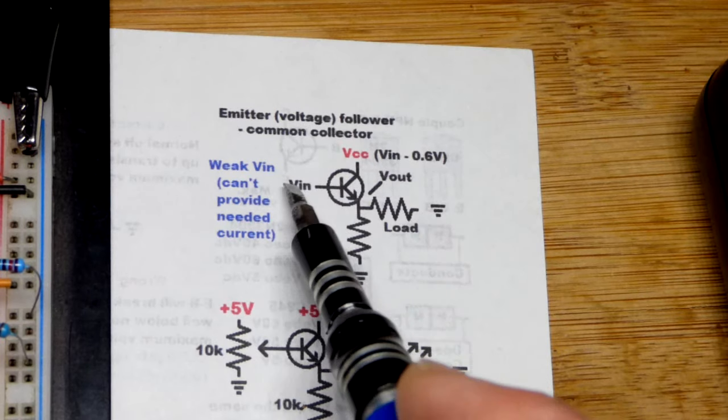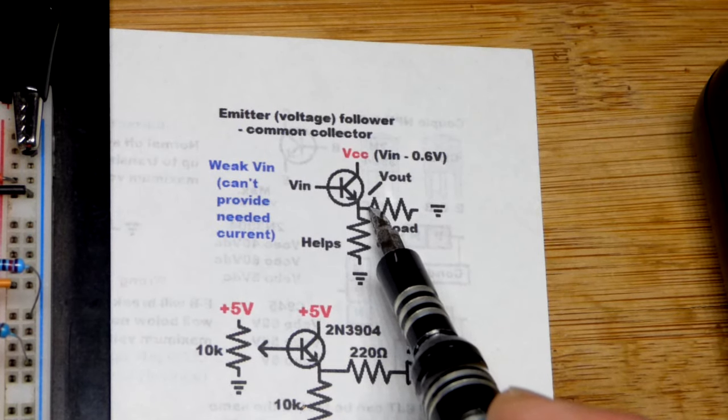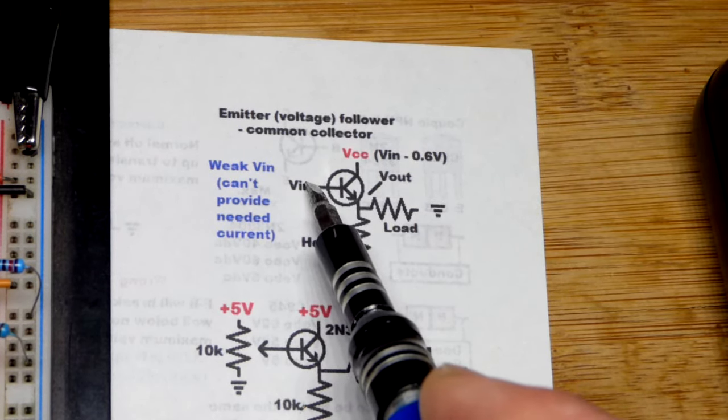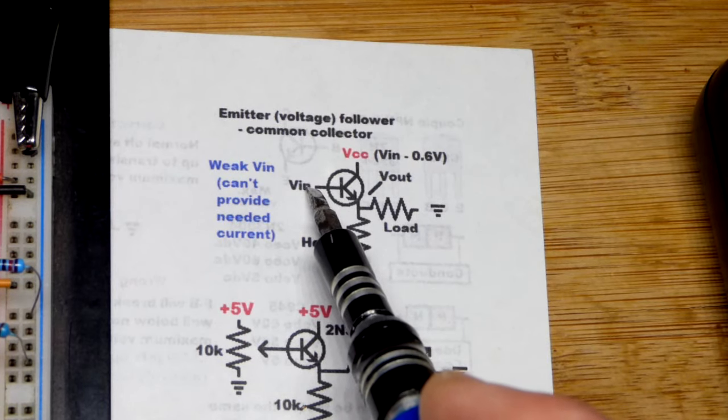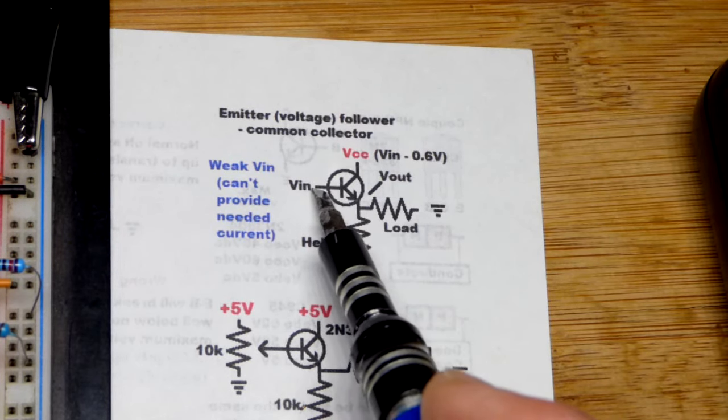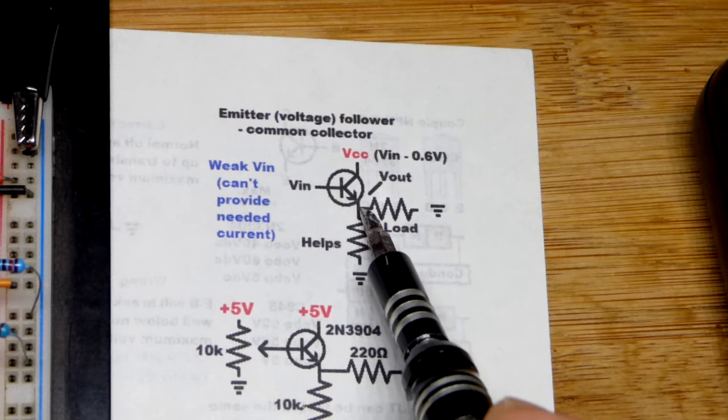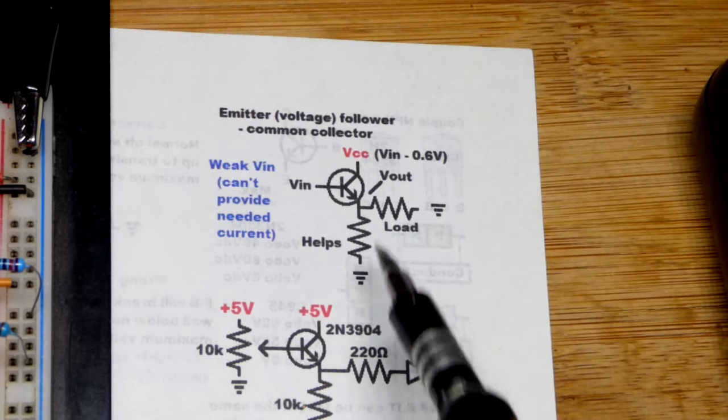The main thing is, you have a certain voltage you want to put across that load. You have something that's coming up with that voltage, but for whatever reason, it cannot provide the power. And it's okay that it's 0.6 volts less because of the base-to-emitter drop right there.